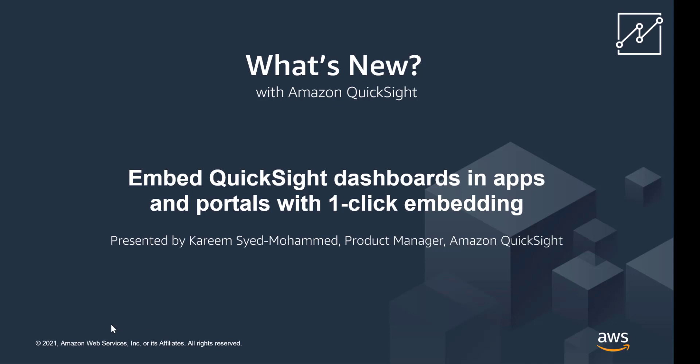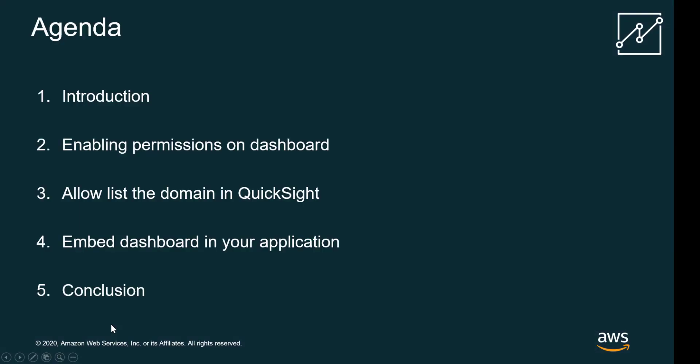First, we are going to look at the agenda. We will talk about Amazon QuickSight as part of the introduction. Then I am going to take you through the three steps required to use this feature. The first step is enabling permissions on the dashboard. The second step is allow-listing the domain that you will be using to embed the dashboard in QuickSight. And the third step is embedding the dashboard itself in your application.